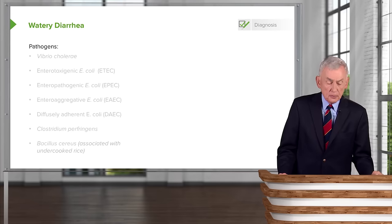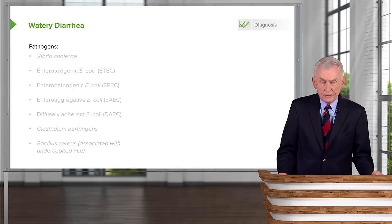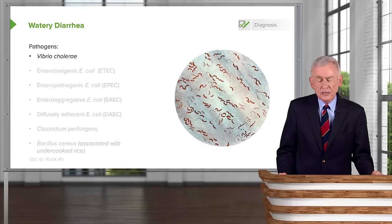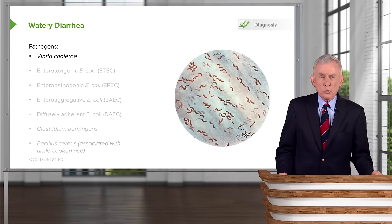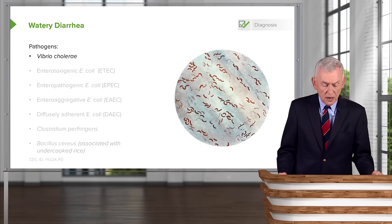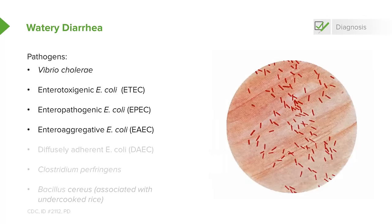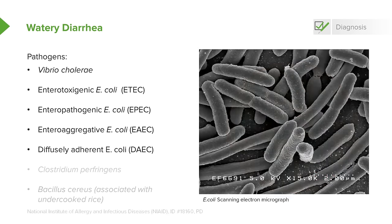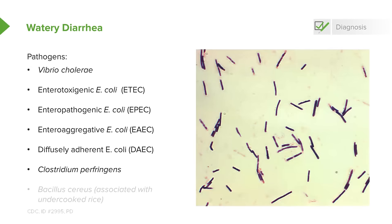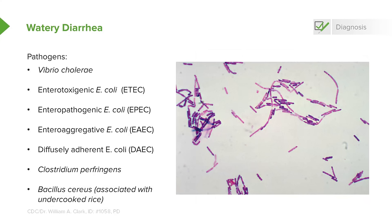Here's a short list of pathogens that can cause watery diarrhea. The most prominent is Vibrio cholerae, the cause of cholera. Then there are a whole series of E. coli organisms: enterotoxigenic E. coli, enteropathogenic E. coli, enteroaggregative E. coli, and diffusely adherent E. coli — they all look alike under the microscope. Then there's Clostridium perfringens, which can cause watery diarrhea, and Bacillus cereus is also a cause of watery diarrhea.